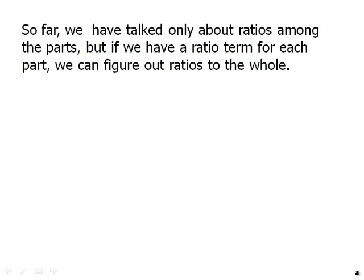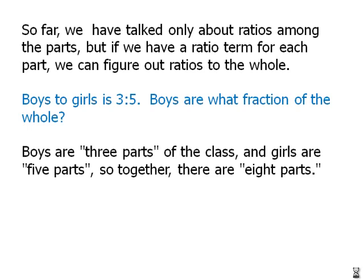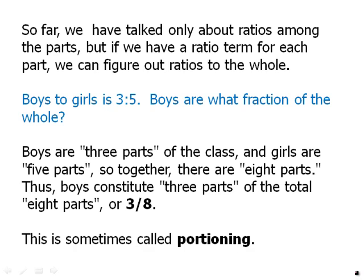So far we've talked only about ratios among the parts. But if we have a ratio term for each part, we can figure out ratios to the whole. For example, boys to girls is 3 to 5. Boys are what fraction of the whole? Well one way to think about this is that boys are 3 parts of the class and girls are 5 parts of the class. So together there are 8 parts. Thus boys constitute 3 parts of the total 8 parts or 3 eighths. This is sometimes called portioning.